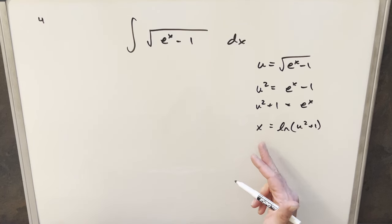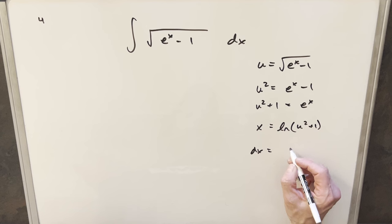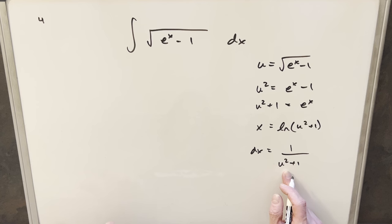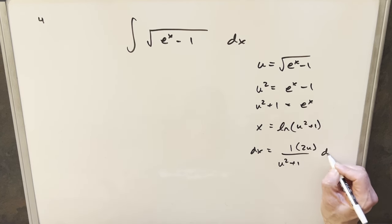Then from here, we'll just go ahead and take the derivative. So on the left, we'll get dx. Taking the derivative of this thing is going to give me one over u squared plus one. Then we need the chain rule. Derivative of this is going to give me two u, and then we'll have a du on the end.